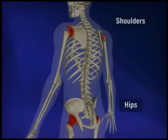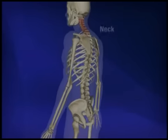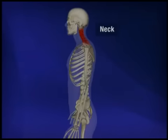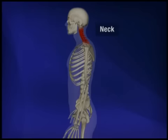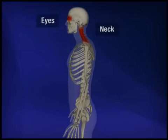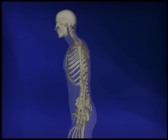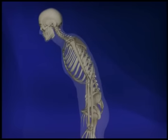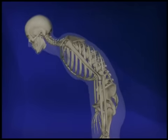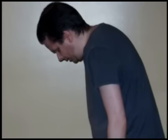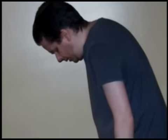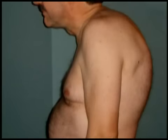Hips and shoulders are involved about 30% each. The neck is involved three quarters of the time and eyes are involved almost 40% of the time. At times it will even cause increased curvature of the spine to the point where people can't look up or forward, and it can even become what's called a bamboo spine.